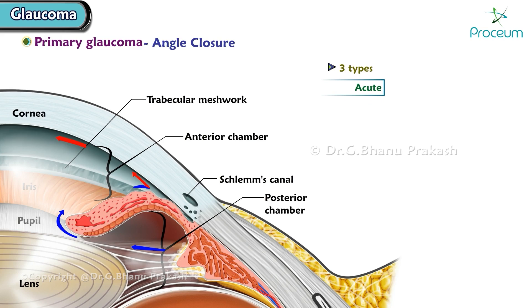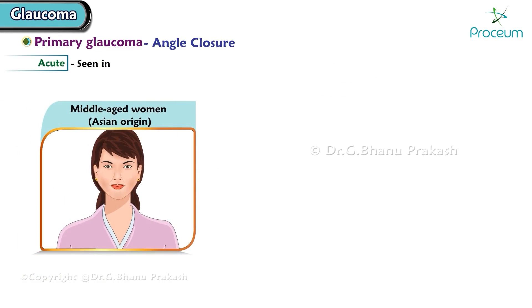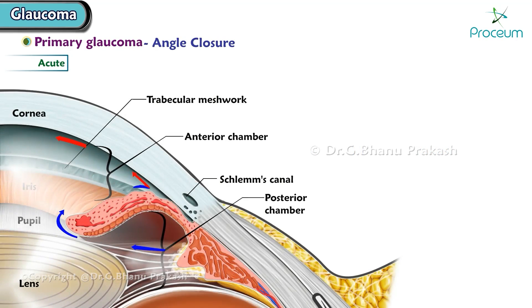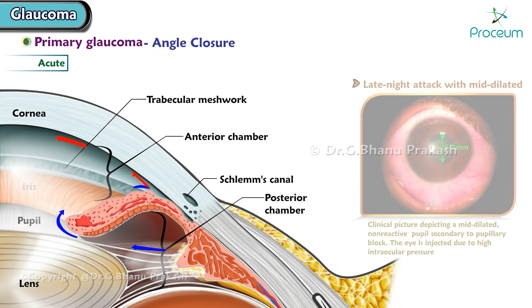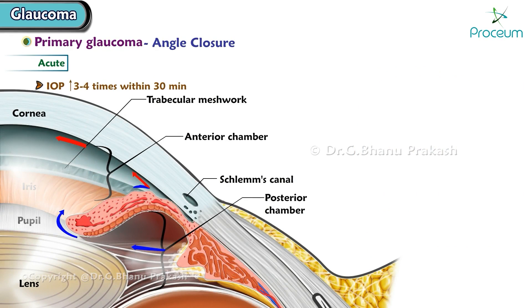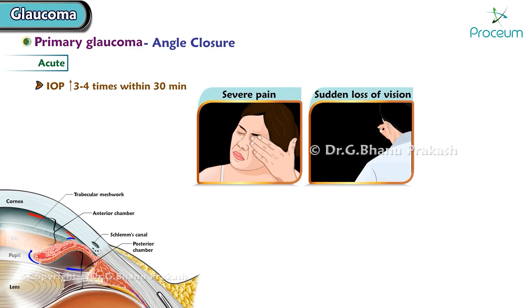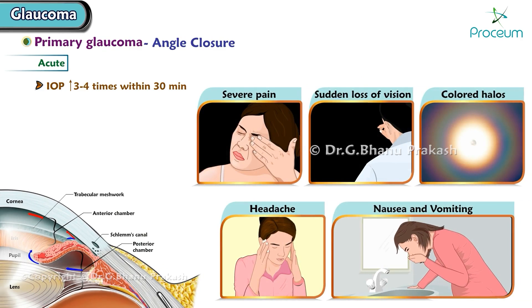In acute angle closure glaucoma, there is a sudden rise of intraocular pressure greater than 40 mmHg due to a total block of the angle. It is not self-resolving and is usually seen in middle-aged women of Asian origin, hypermetropes, and those under emotional distress. It is mostly a late-night attack with a mid-dilated pupil of six to eight millimeters. Intraocular pressure increases three to four times within 30 minutes. Patients present with severe pain, sudden loss of vision, colored halos, headache, nausea, and vomiting.